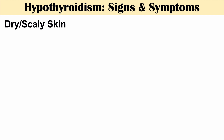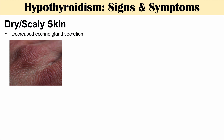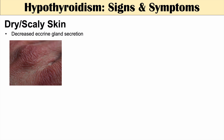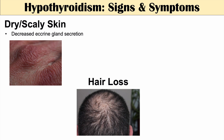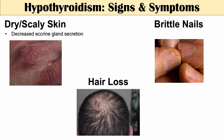Other signs of hypothyroidism include dry scaly skin, due to decreased eccrine gland secretion — the exact mechanism is not entirely known, but hypothyroidism is known to reduce eccrine gland secretion. We also see hair loss due to increased hair fall and reduced hair growth, and brittle nails — cracked and chipped nails due to decreased nail growth.